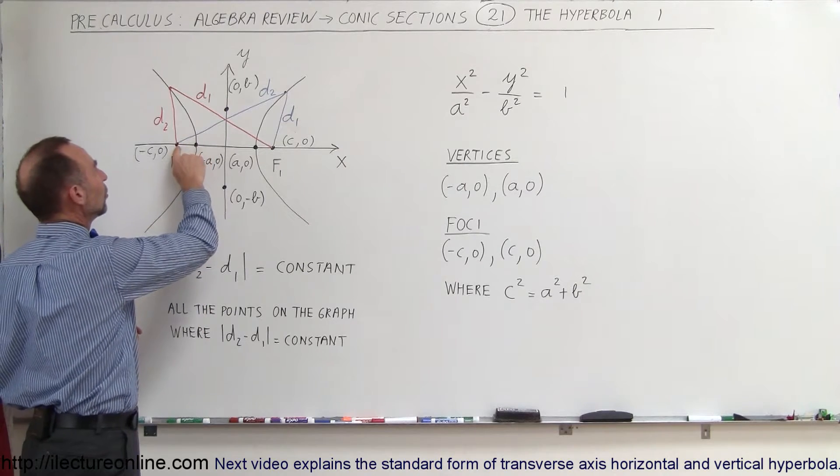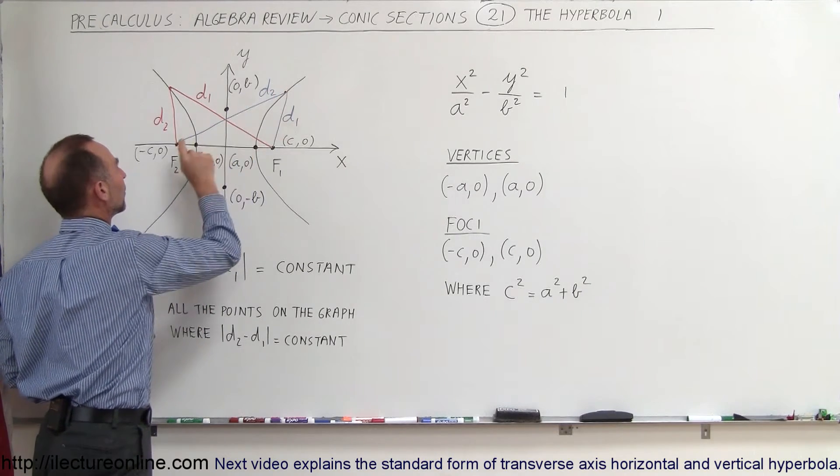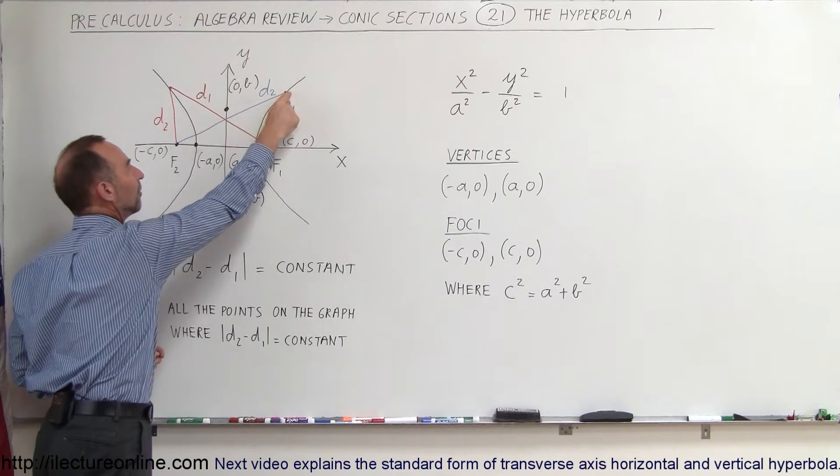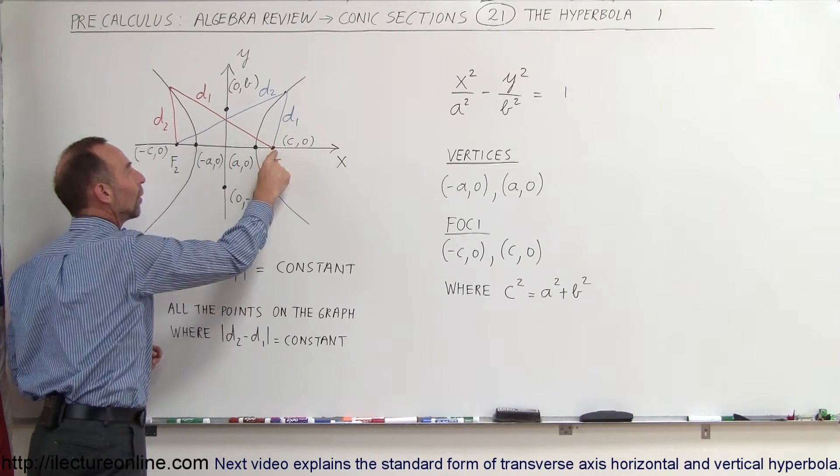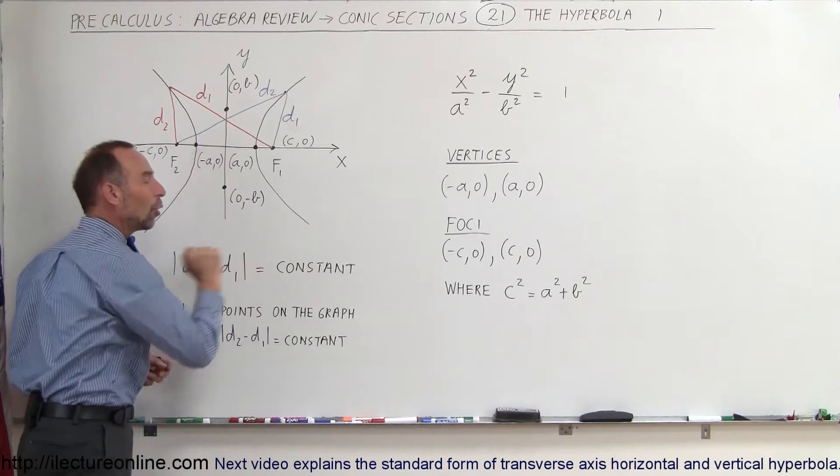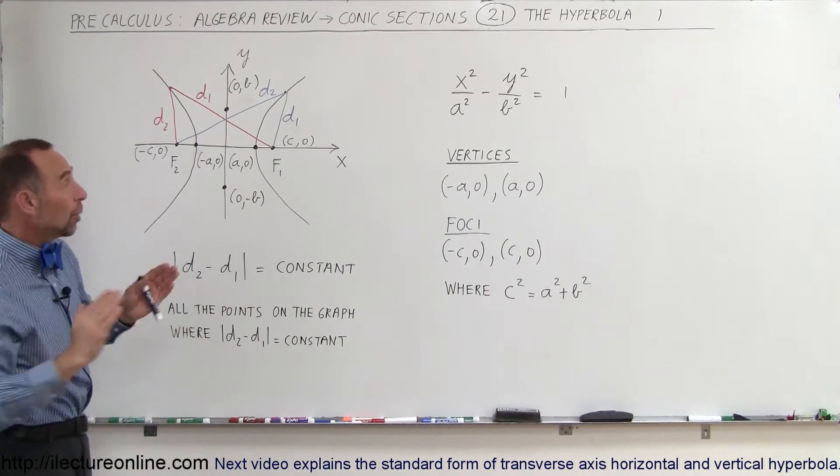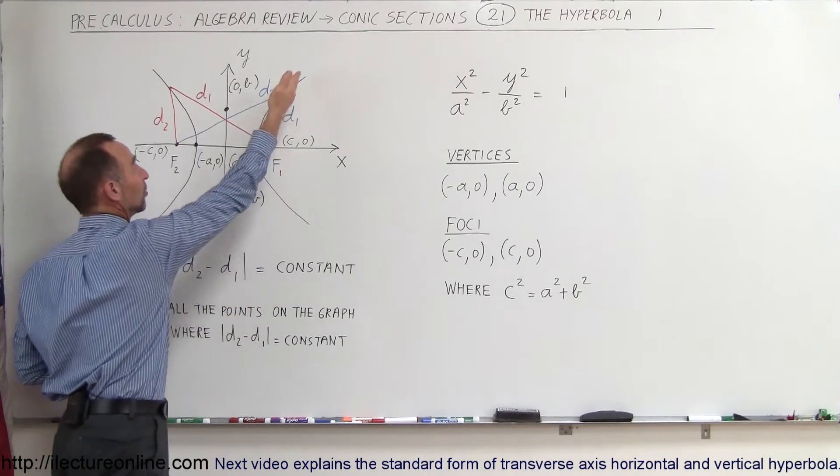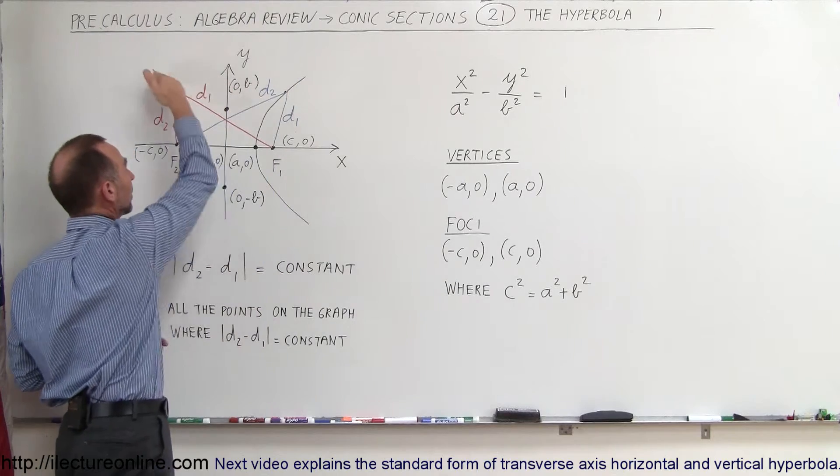In other words, distance d2 from here to there, from focus 2 to the graph and the distance from focus 1 to the same point on the graph, that difference must always be a constant. And it works for both sides because the hyperbola really has two parts to it. Here's one part, there's the other part.